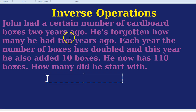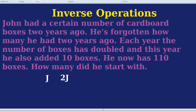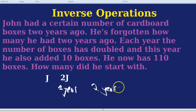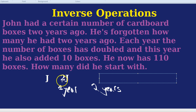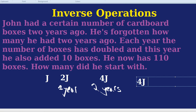Always pick the number of things as they were originally, because that makes the situation simpler. That was two years ago, and each year the number of boxes doubled. So after one year he's got 2j. After two years, he has double of what he had after one year — double of 2j is 4j. That's not quite the full situation because he also added 10 boxes, so the full situation is he has 4j plus 10. Inverse operations is all about going backwards, so: 4j plus 10 equals 110.